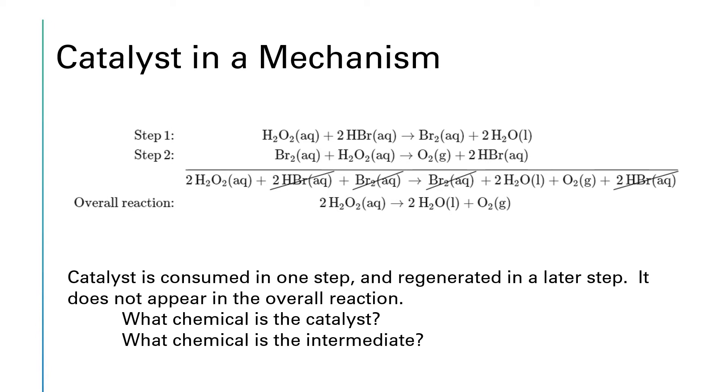So let's take a look at this mechanism for the decomposition of hydrogen peroxide and see if we can figure out what chemical is acting as a catalyst and what chemical is acting as an intermediate. So the catalyst is something that gets added but doesn't appear in our overall reaction, so that's looking like it's HBr. And you'll notice the HBr gets regenerated down here. So the HBr is in the role of a catalyst.